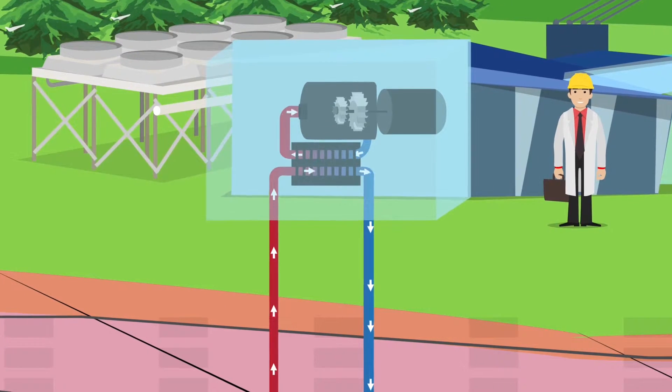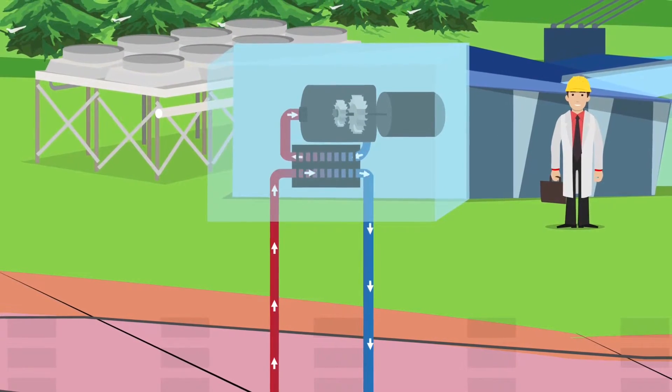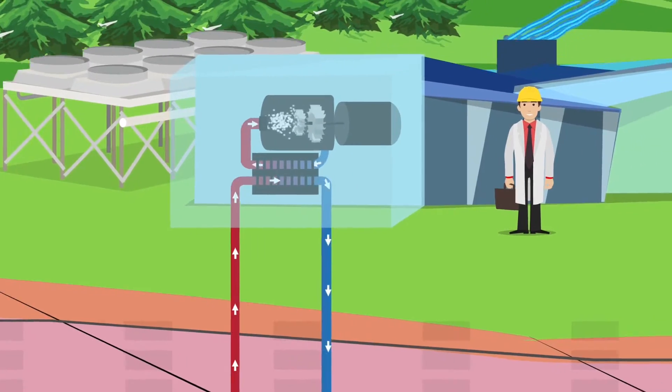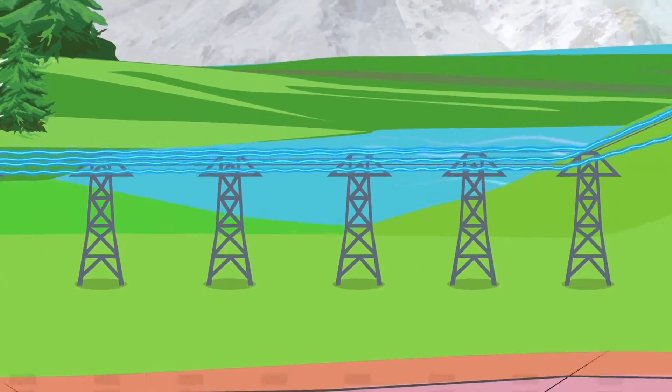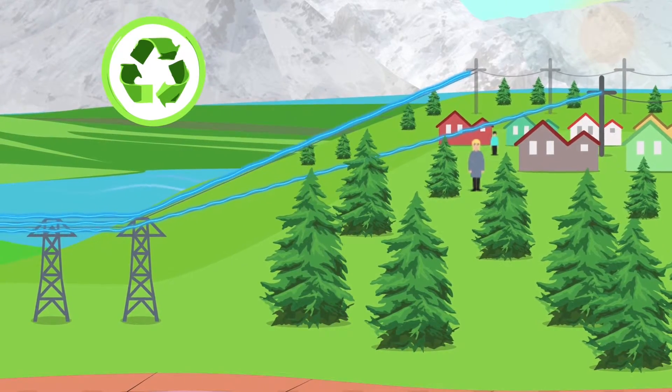Binary turbine power plants use hot formation water to vaporize another fluid. The second fluid drives a turbine and generator to produce electricity. This closed-loop system produces no emissions and has one of the smallest environmental footprints of any power supply.